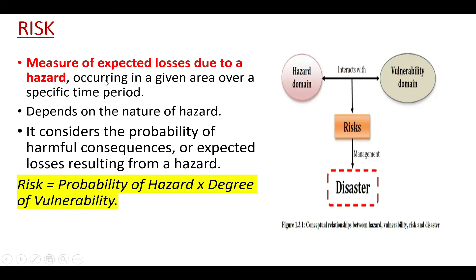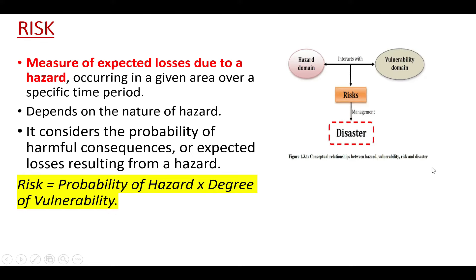Next is risk. Risk is a measure of expected loss due to a hazard occurring in a given area over a specific time period. It is the probability of loss or amount of loss that will occur in a community, society, or system in any disaster, and depends upon the nature of the hazard. Risk is defined as: probability of hazard multiplied by degree of vulnerability. This diagram shows the relationship between hazard, vulnerability, risk, and disaster — disaster being the interaction between hazard and vulnerability leading to risk. With effective risk management, it is possible to prevent and mitigate the impact of disaster.